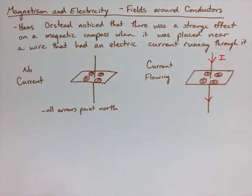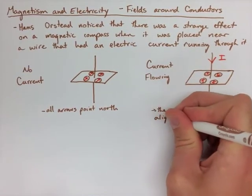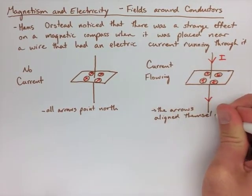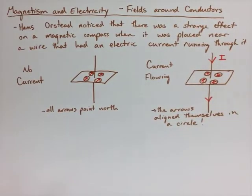Now, this is the principle of electromagnetism. When an electric current flows through a conductor, a magnetic field is created in circles around it.